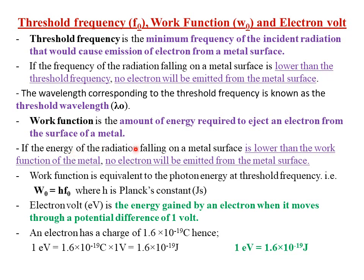If the energy of the incident radiation — for example, the ultraviolet radiation falling on the metal surface — is lower than the work function of the metal, then no electron will be emitted. An electron can only be emitted if the energy of the incident radiation is either equal to or greater than the work function of the metal. Work function is equivalent to the photon energy at threshold frequency. A photon is simply one particle of light; you'll understand more about photon energy when covering quantum physics.